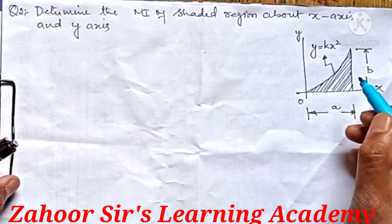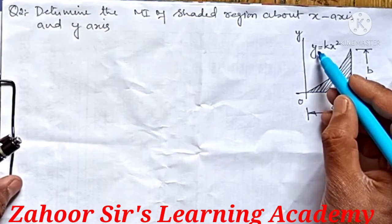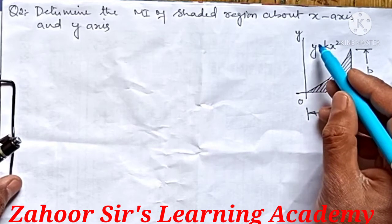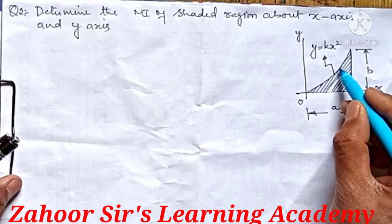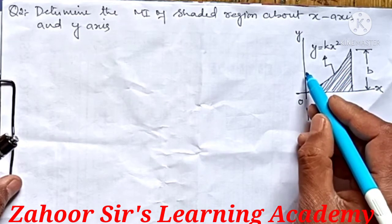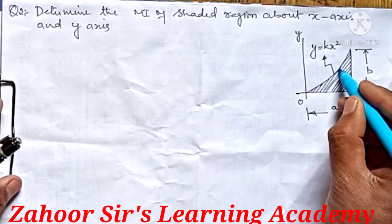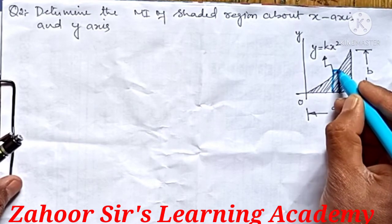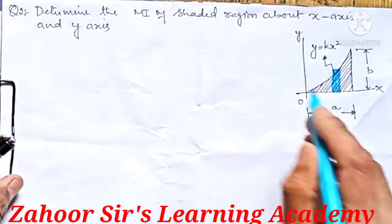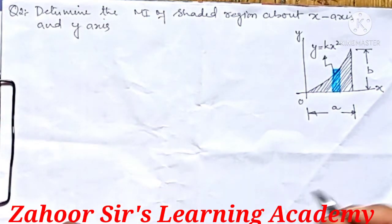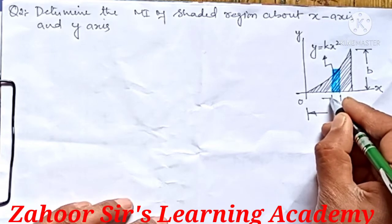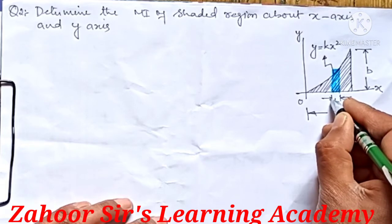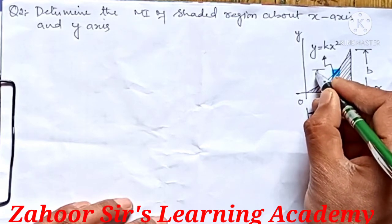As I said in the previous class, you have to look at the equation. The equation is y = kx², so it is in the form of y. Therefore, we need to cut a strip parallel to the y-axis — we cut a strip like this, and this strip is parallel to the y-axis.